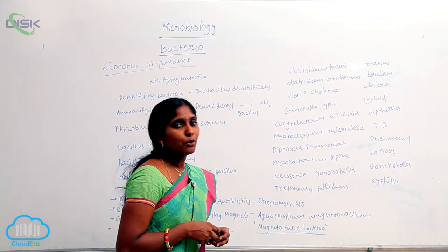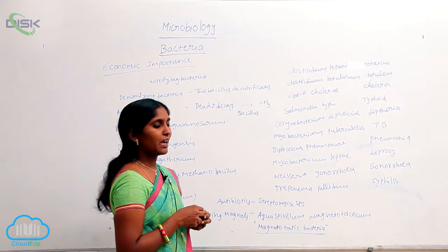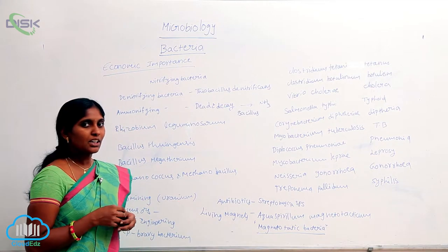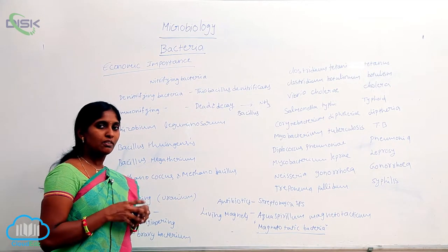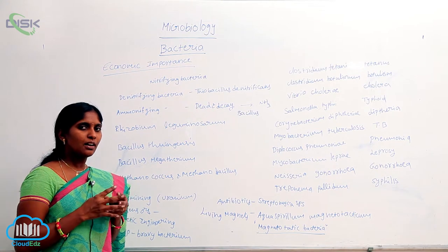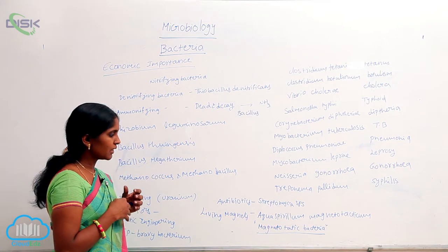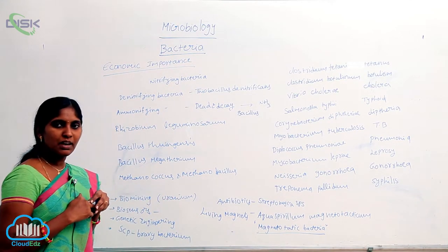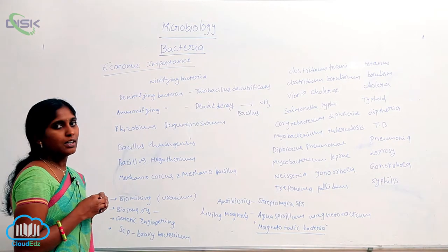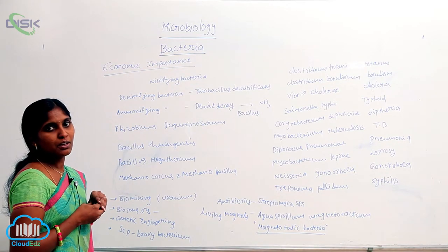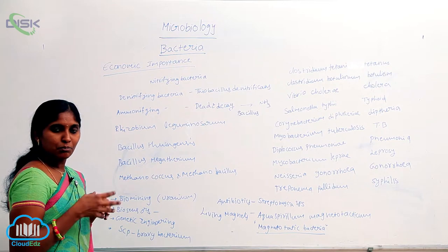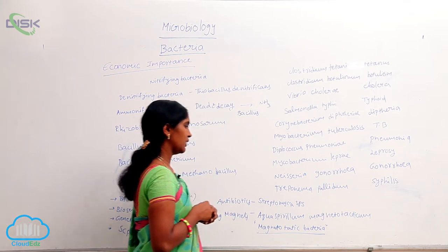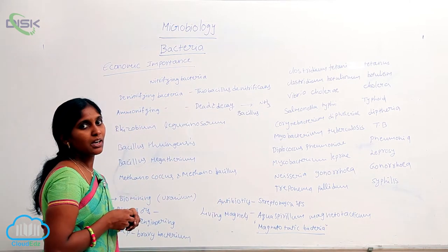A very important topic is living magnets. Living magnets means where the magnetic field is more, the bacteria are directed or led there. Such types of bacteria are called magnetotactic bacteria. By using magnetotactic bacteria, scientists can easily find the magnetic field in the depths of the oceans. A best example of magnetotactic bacteria is Aquaspirillum magnetotacticum.